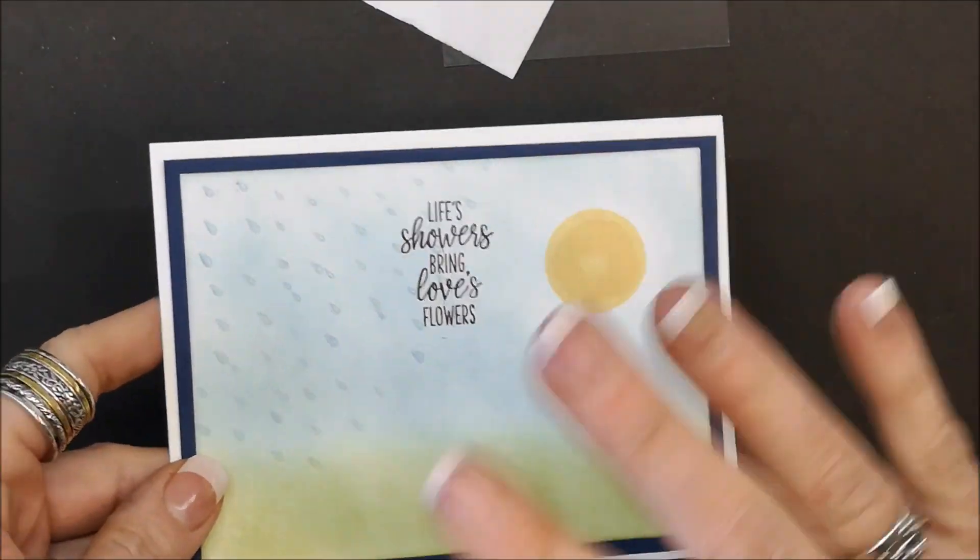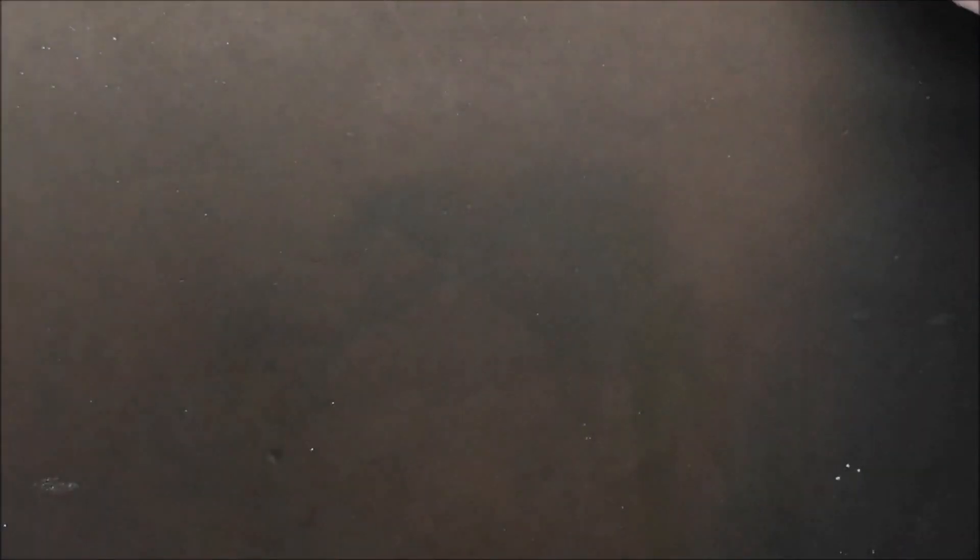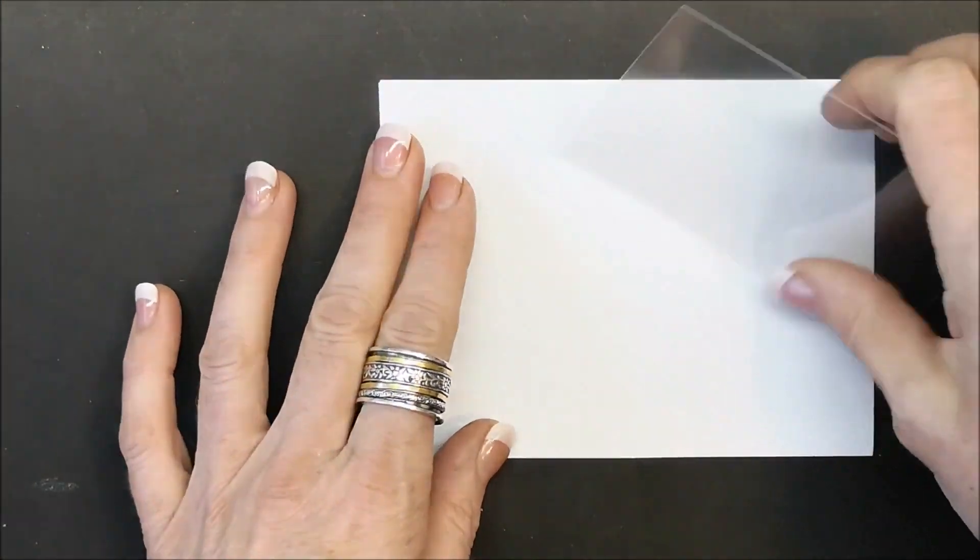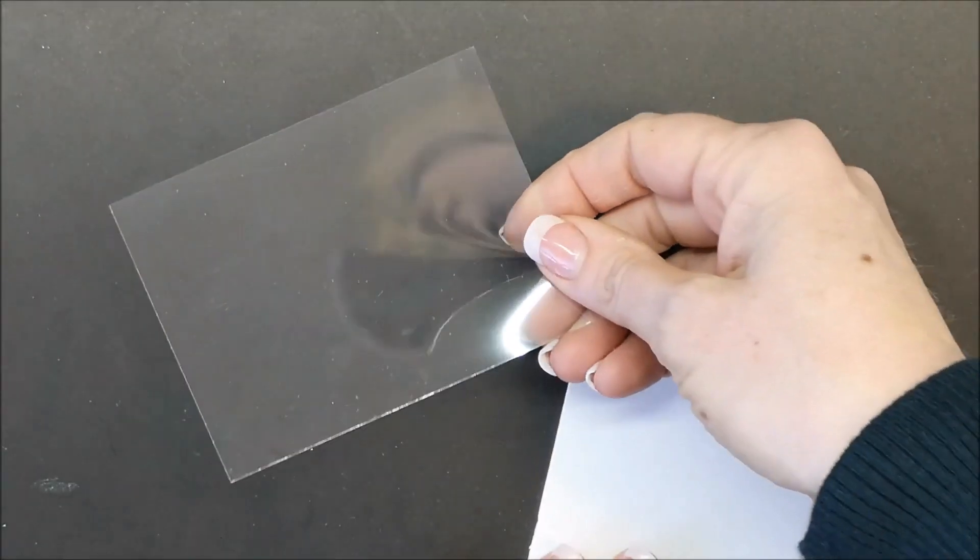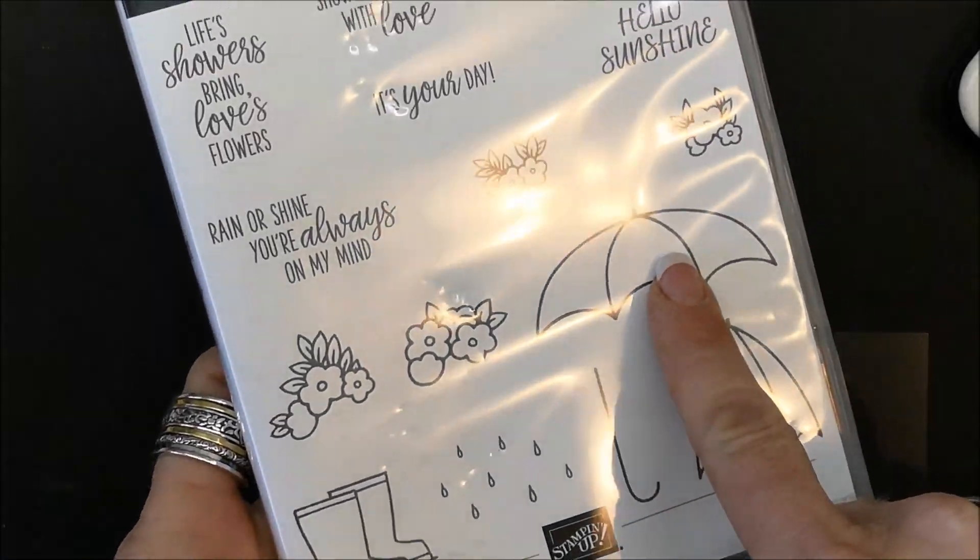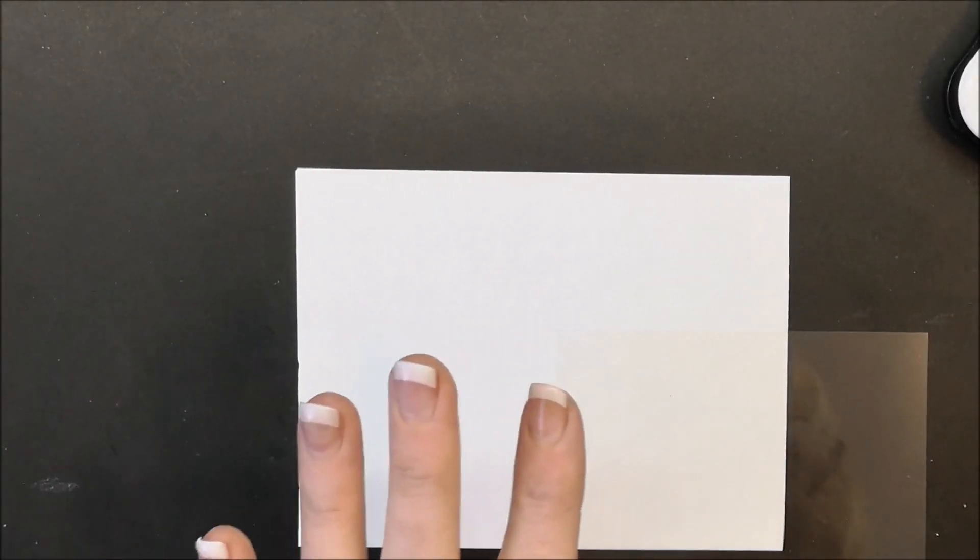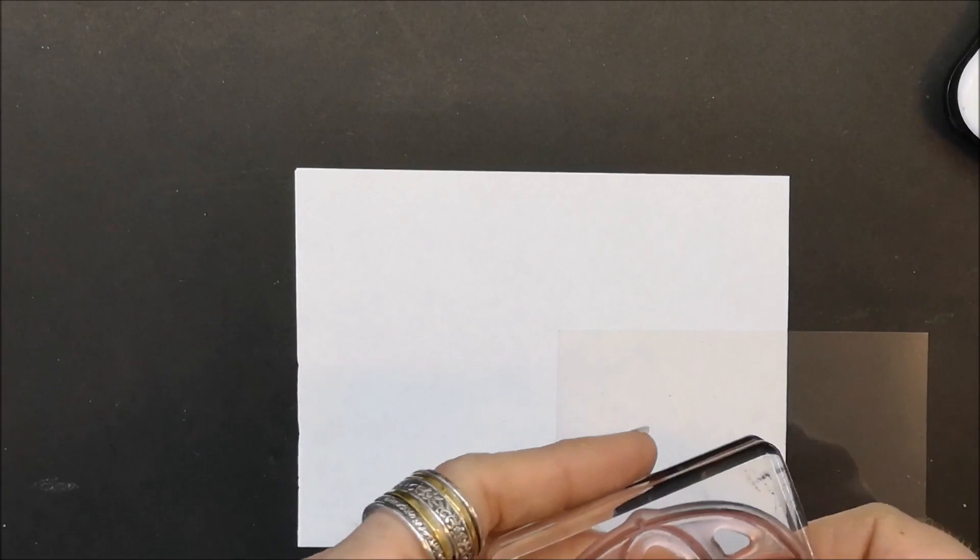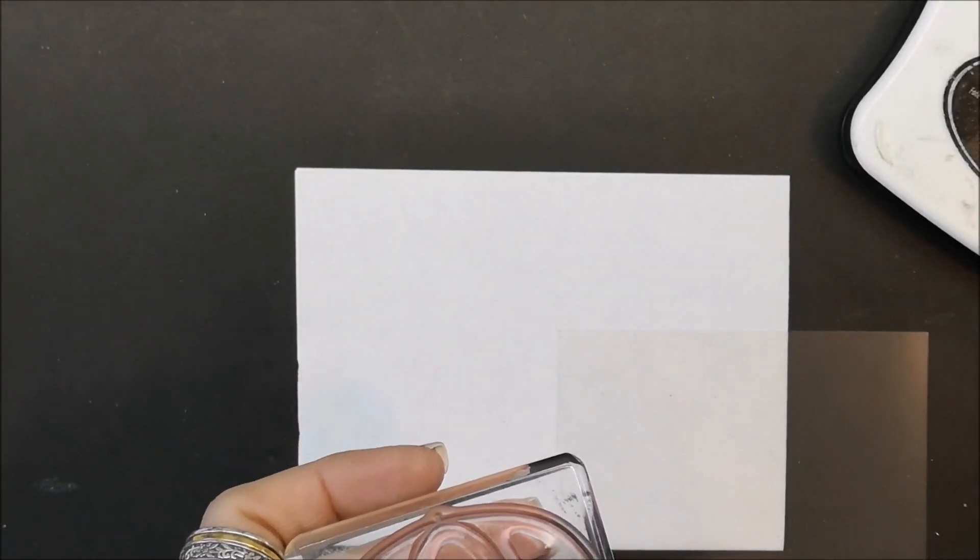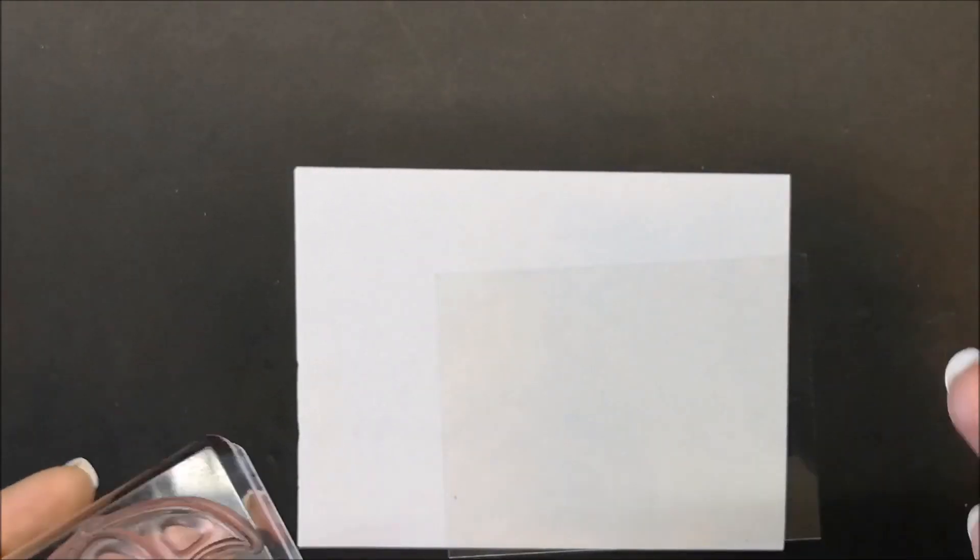There's the card base done, I'm going to put this aside and move on to the stamp and blends glimmer technique. You guys are going to love this, this is a real wow. I have my window sheet and I'm going to be stamping the boots and the umbrella. Two things: because these are photopolymer stamps, you want to use Memento, but because I'm using window sheets I need to use StazOn so that it dries quick.